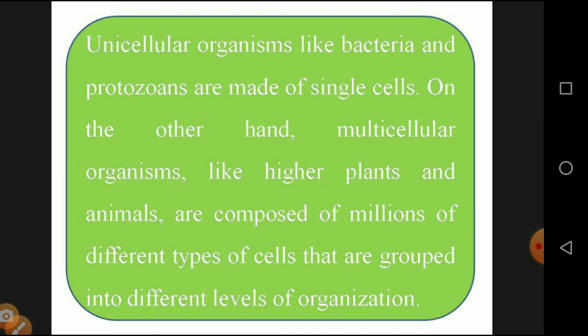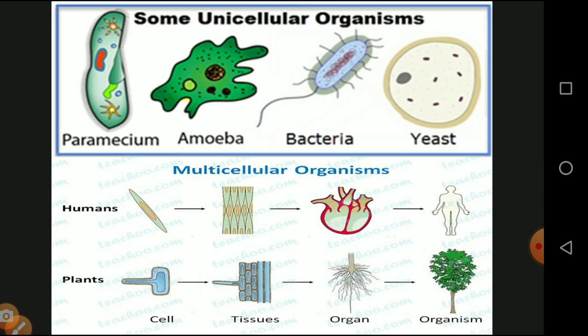On the other hand, multicellular organisms like higher plants and animals are composed of millions of different types of cells grouped into different levels of organization - some as epithelial cells, some as ground cells, some as vascular cells, and some as epidermal cells. Examples of unicellular organisms include paramecium, amoeba, bacteria, and yeast, while plants and animals are multicellular organisms.